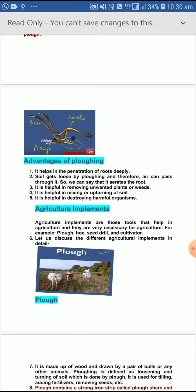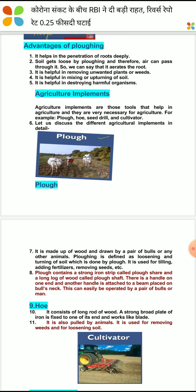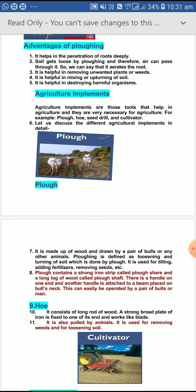A few agricultural implements are also required in different agricultural practices; these are also known as tools. The first is the plow, with the help of which we can plow the land and loosen the soil. The plow contains a strong iron strip called a plowshare and a long log of wood called the plow shaft. There is a handle on one side and another handle is attached to a beam placed on the bull's neck. This can easily be operated by a pair of bulls or by men.